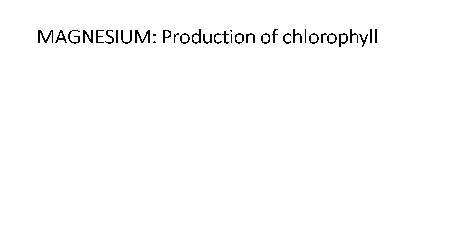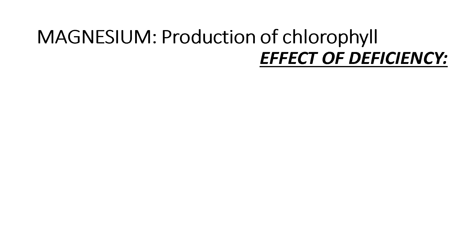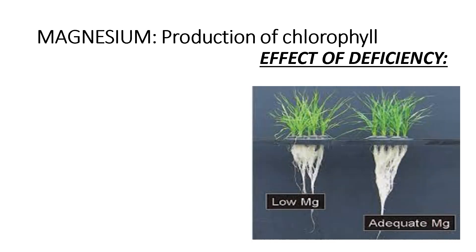Magnesium is very important in the production of chlorophyll, that is the green color pigment in plants. Looking at this picture — Mg is the symbol for magnesium — the plant with less amount of Mg shows stunted or retarded growth, whereas the plant with adequate Mg shows sufficient growth. So, deficiency of magnesium in plants results in retarded or stunted growth.